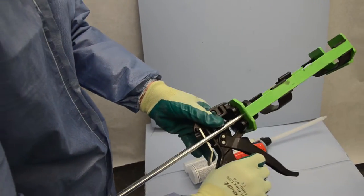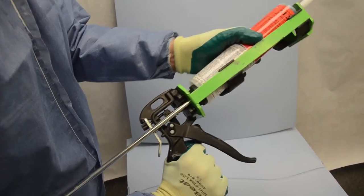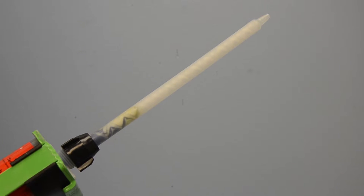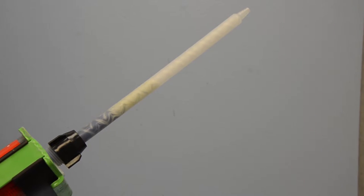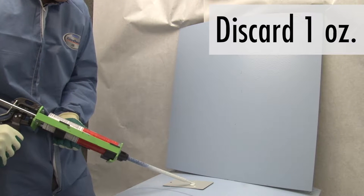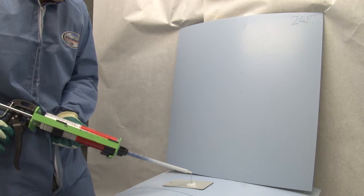Place the tube in the applicator and squeeze the handle to dispense material. It is very important to dispense roughly one ounce of material to waste. This will ensure only well-mixed material is being used for the repair.